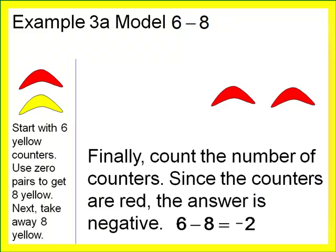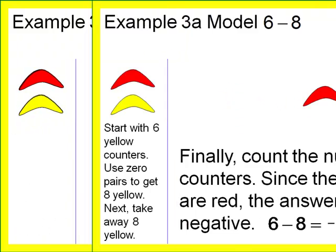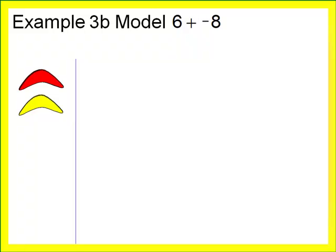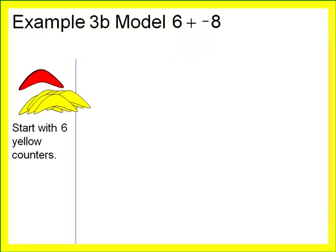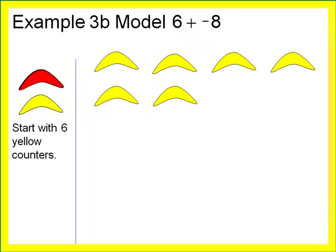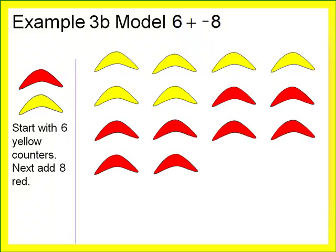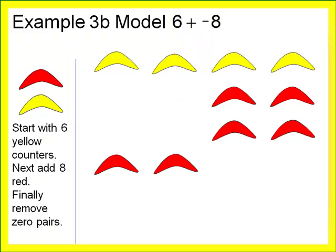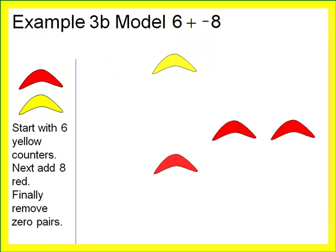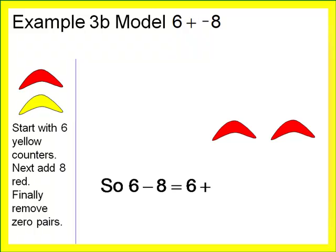For the second part of example three, we model six plus negative eight. Start with six yellow counters, then add eight red counters to represent negative eight. Remove the zero pairs that are in the workspace. What remains is the answer. Six minus eight and six plus negative eight give the same answer: negative two.